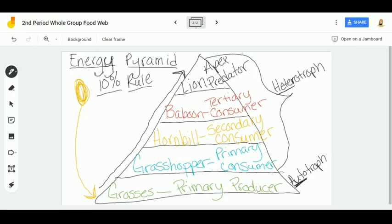For instance, if I have, let's say, 10,000 kilocalories (kcal) of energy here at my producers level, only ten percent of that energy is going to be passed on to my grasshoppers. So when my grasshopper consumes the grasses, it's only going to receive 1,000 kilocalories of energy. Then when my hornbill consumes the grasshopper, they're only receiving 100 kilocalories.